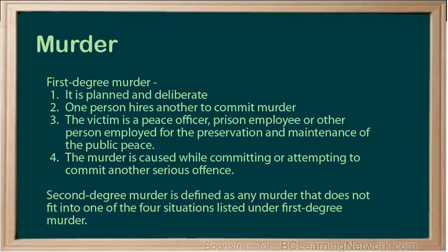Second degree murder is defined as any murder that does not fit into one of the four situations listed under first degree murder. Both first and second degree murder carry a minimum sentence of life imprisonment. The difference is when they can apply for parole — after 25 years for first degree murder, and usually after 10 years for second degree murder.